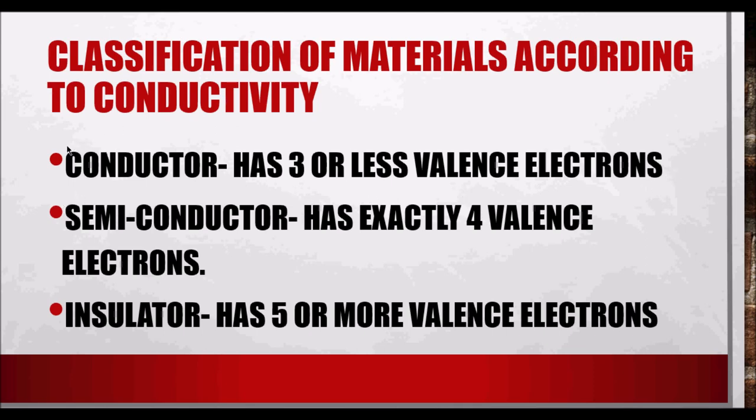So conductors have 3 or less valence electrons. These are the most common materials used as wires: aluminum, copper, silver, and gold. Gold has high conductivity but is not commonly used. Semiconductors are silicon and germanium. Insulators, common materials are rubber and porcelain. In the next video, we will discuss charge and other electrical quantities, and we will solve some problems involving how to get the atomic number, atomic mass, and determining if a certain material is a conductor, semiconductor, or insulator. Thank you.